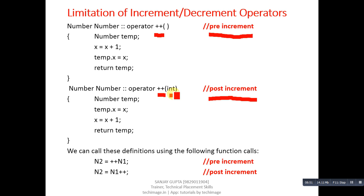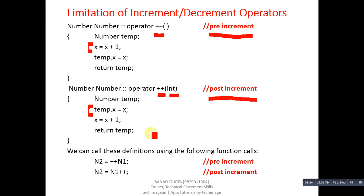In the pre-increment definition, the increment is done first and then assignment; in the post-increment definition, assignment is done first and then increment. This fulfills pre-increment and post-increment behavior respectively. The compiler automatically links the calling statements to the respective definitions. Whenever you implement both pre and post increment or decrement in the same program, remember this concept to avoid compilation or execution errors.